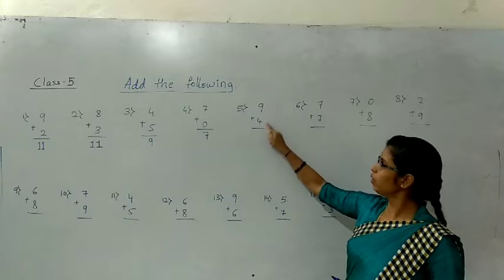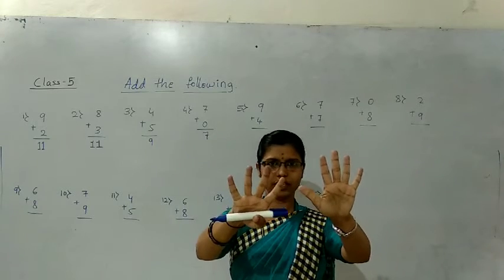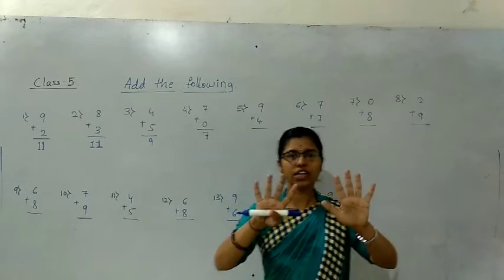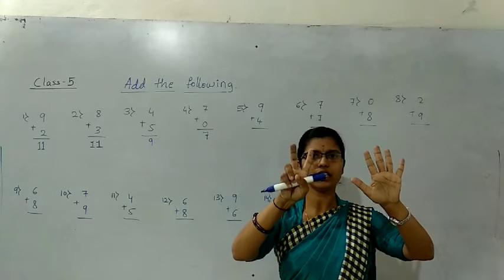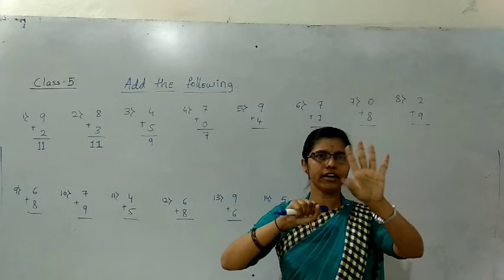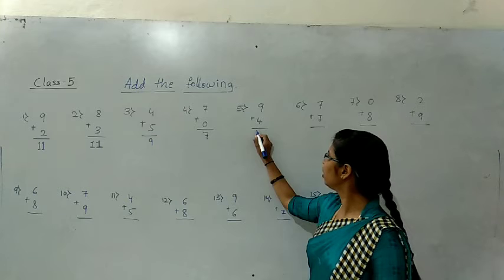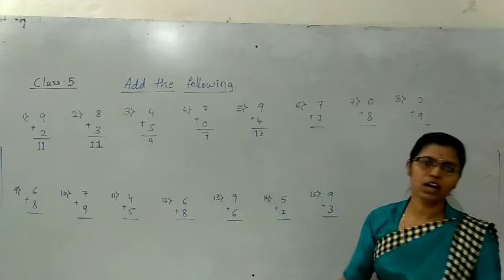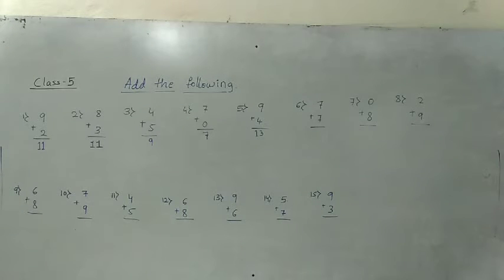Next one: 9 plus 4. We should hold 9 fingers. The below number is 4. After 4: five, six, seven, eight, nine, ten, eleven, twelve, thirteen. The answer is 13. 9 plus 4 equals 13.